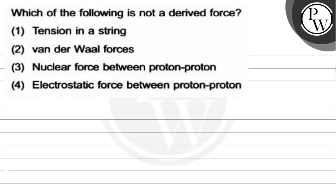Let's read the question. The question says: which of the following is not a derived force? Options are given as: option 1, tension in string; option 2, Van der Waals forces; option 3, nuclear forces between proton and proton; and option 4, electrostatic force between proton and proton.